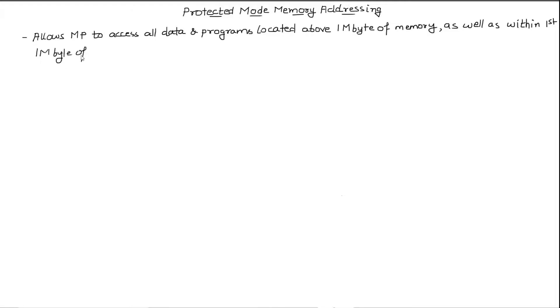Not only that, it can also access data and programs that are within the first one megabyte of memory as well. So that's the first difference between protected mode and real mode memory addressing.